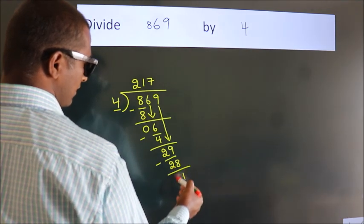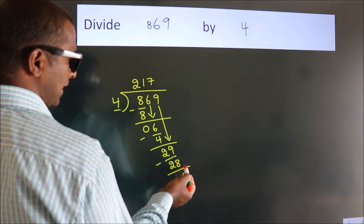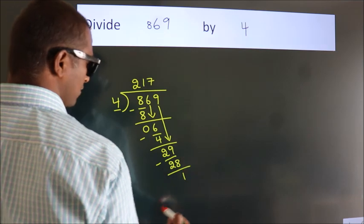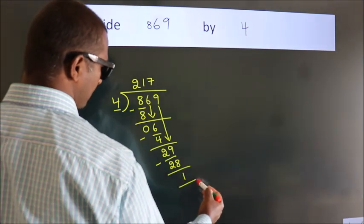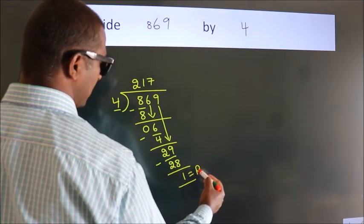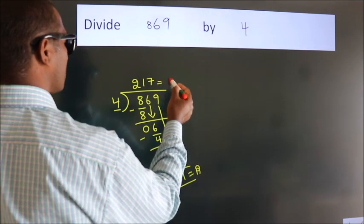After this, there are no more numbers to bring down, so we stop here. This is our remainder, and this is our quotient.